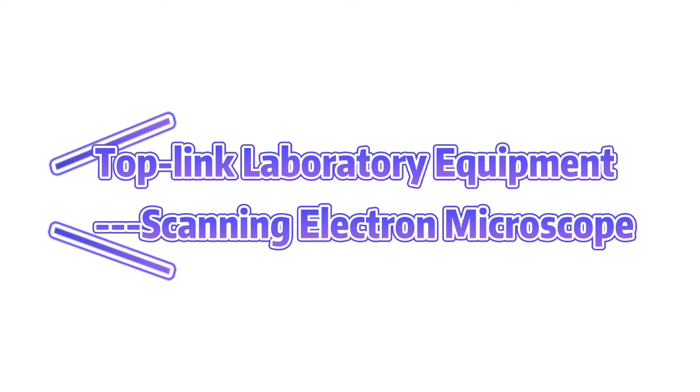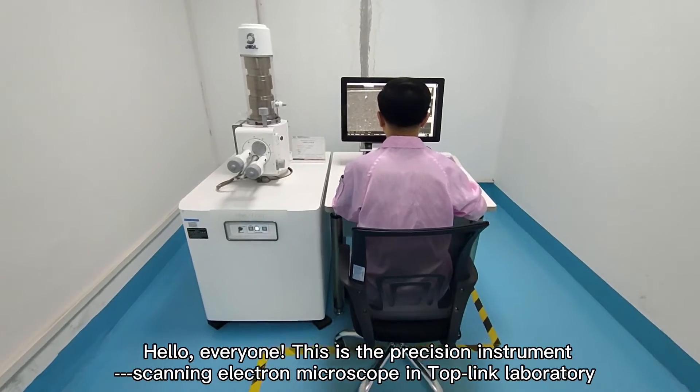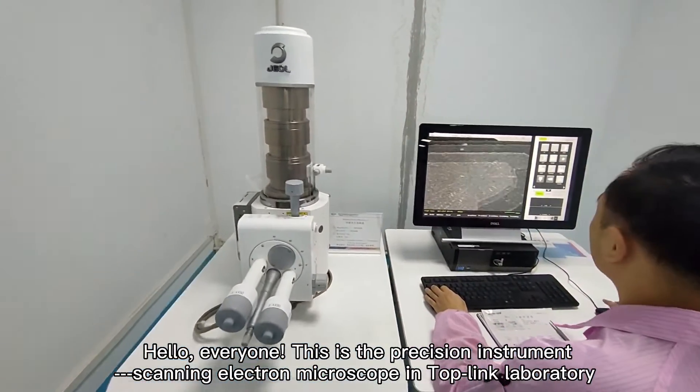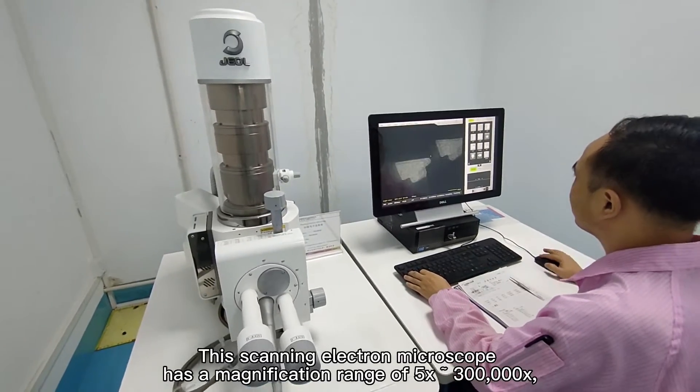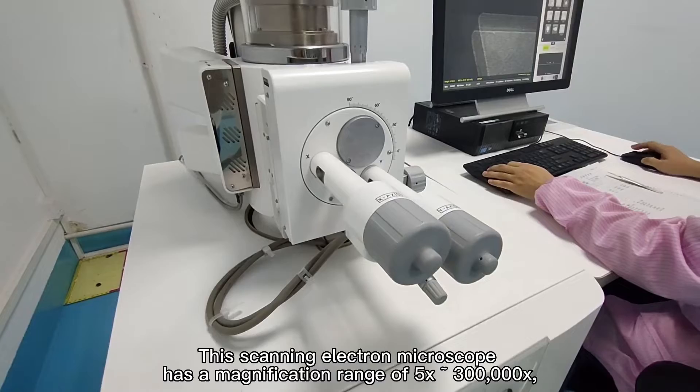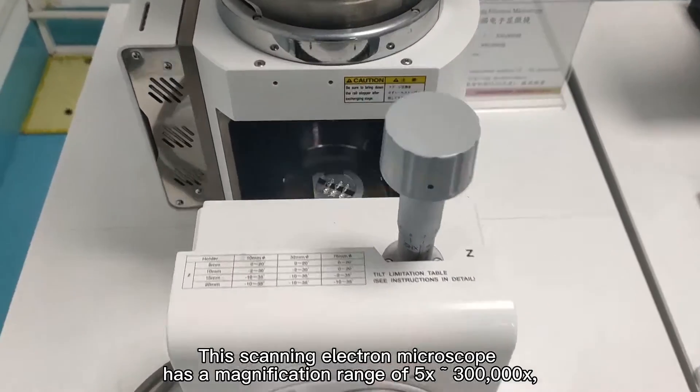Hello everyone, this is the precision instrument Scanning Electron Microscope in Toplink Laboratory. This Scanning Electron Microscope has a magnification range of 5 to 300,000 times.